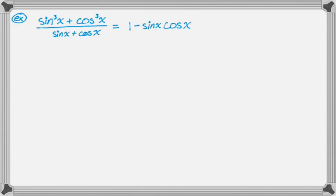So the first problem: we have sine cubed plus cosine cubed, all over sine plus cosine, is equal to 1 minus sine times cosine. This might be from your Algebra 2 nightmares, because now you're going to have to factor a sum of cubes. So hopefully you remember how to factor a sum of cubes.